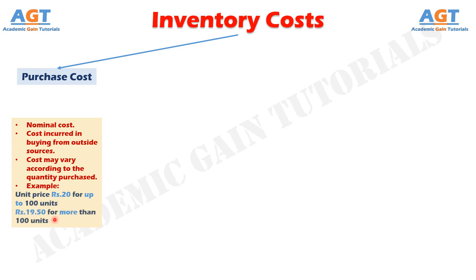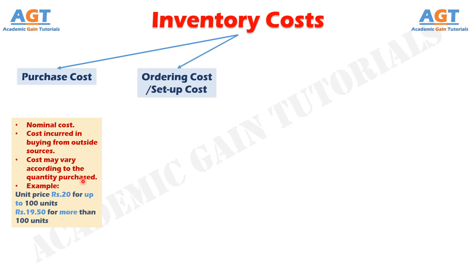If a unit cost is constant, the control decisions would not have any effect, because whether all the requirements are produced just once or made in installments, the total amount of money involved would be the same.